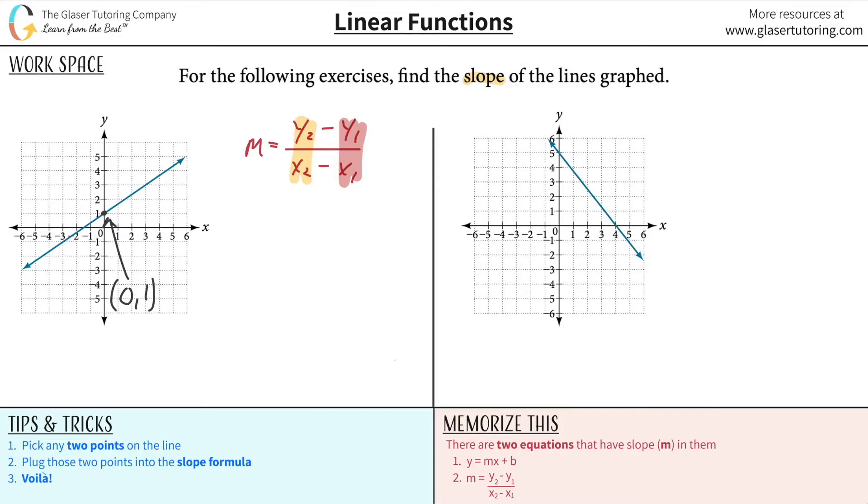Choose another point now. This one looks like it's pretty much right on the money too. What's the coordinates there? It's going to be three, three. So that's three comma three.